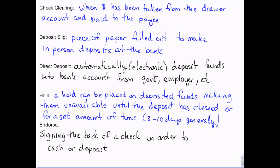Your check clears — or your electronic payment clears — when the money has actually left your account and gone into the other person's account. Until then it's pending. Knowing how long this takes is very important. If your electric bill takes about three days to clear your account, you can't assume the balance you see online is accurate until after that payment has cleared.